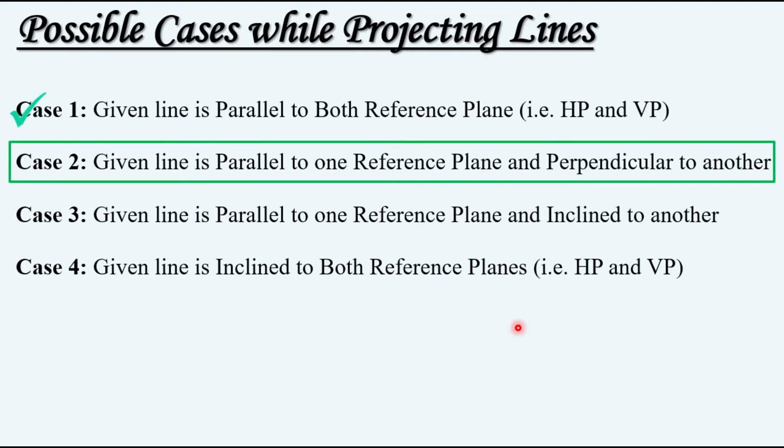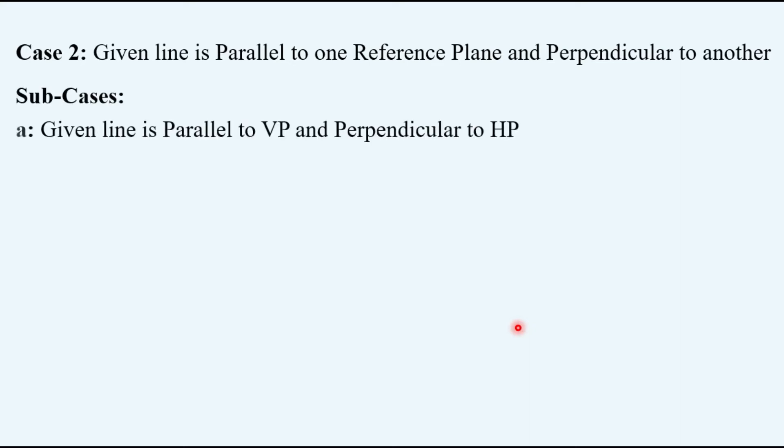Today we will discuss case number two. Case two has two more sub-cases. Sub-case A: when the given line is parallel to VP and perpendicular to HP, and the vice versa, sub-case B: given line is parallel to HP and perpendicular to VP.